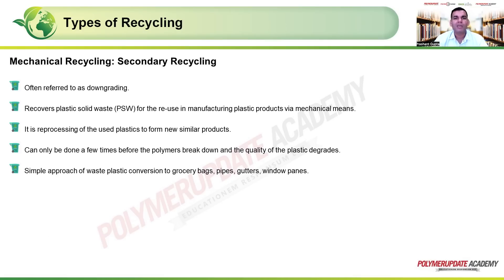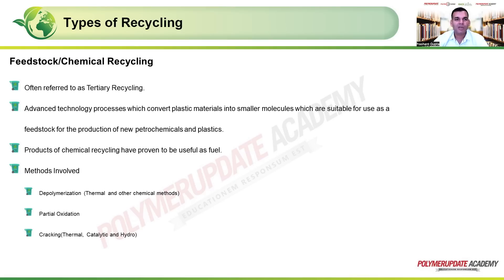The third process, feedstock or chemical recycling, is referred to as tertiary recycling. It uses advanced technology processes to convert plastic materials into small molecules suitable as feedstock for producing new petrochemicals and plastics. Products of chemical recycling have also proven useful as fuel. Various processes can be employed in this category.